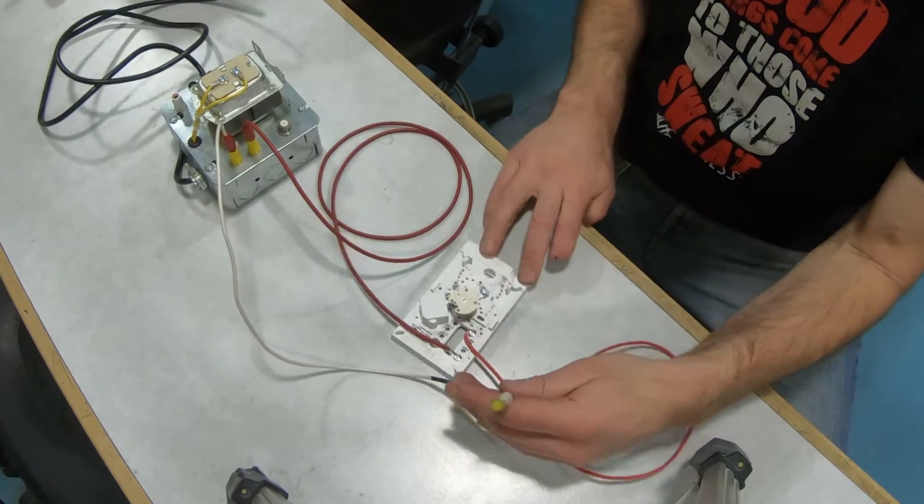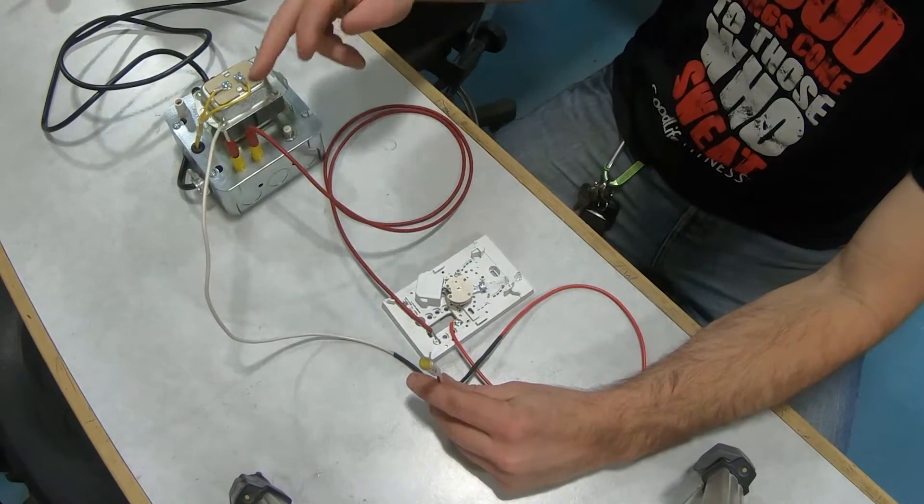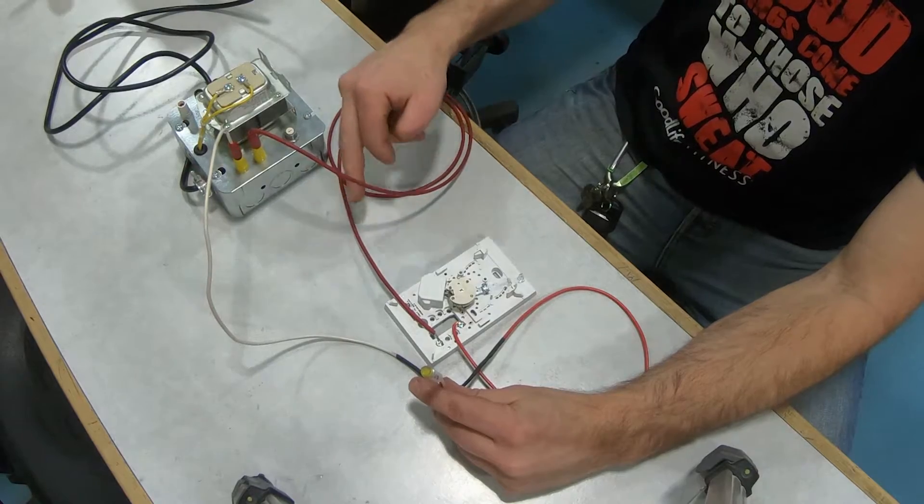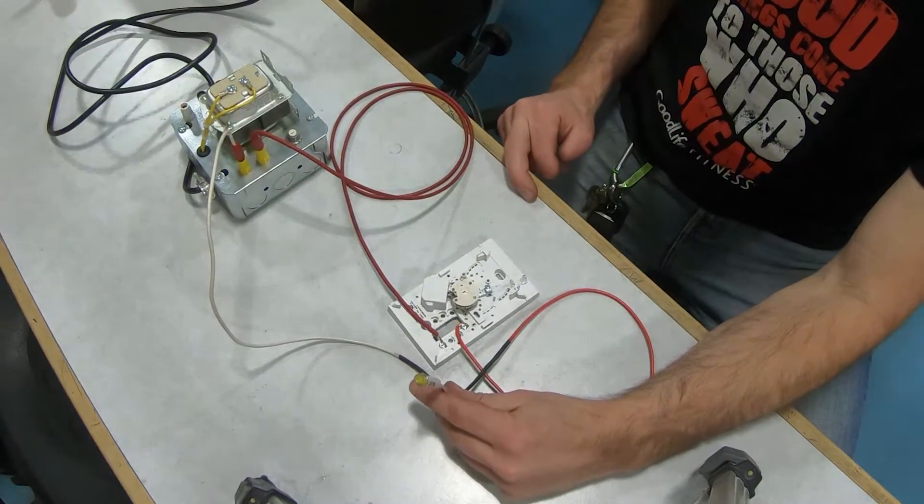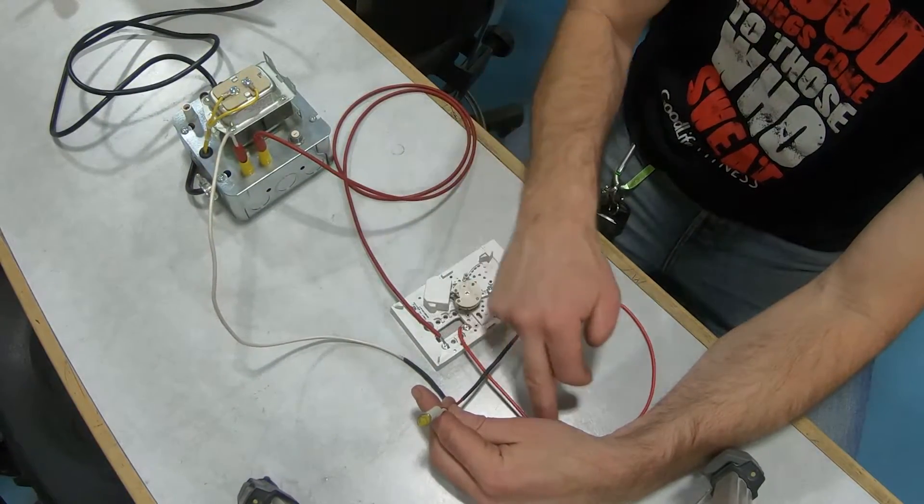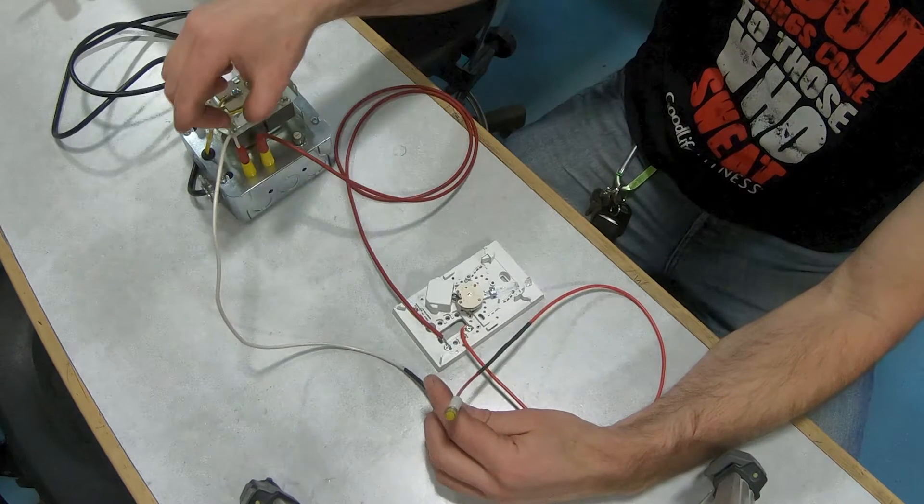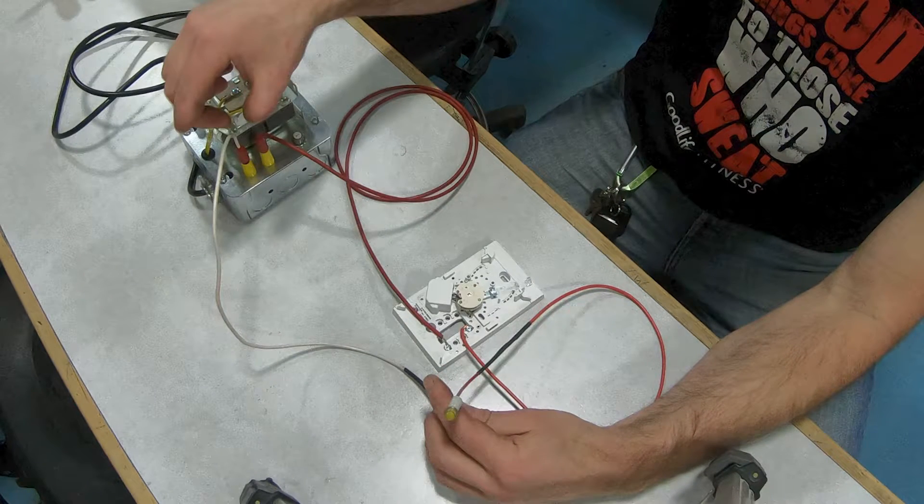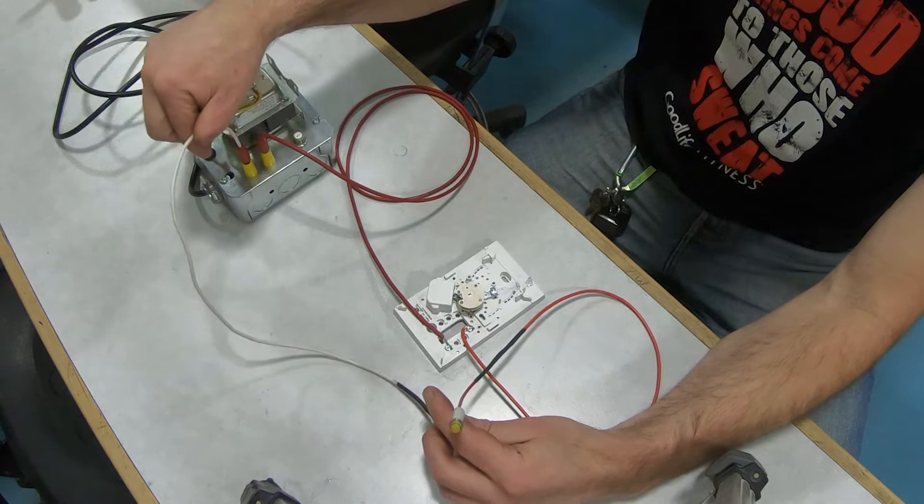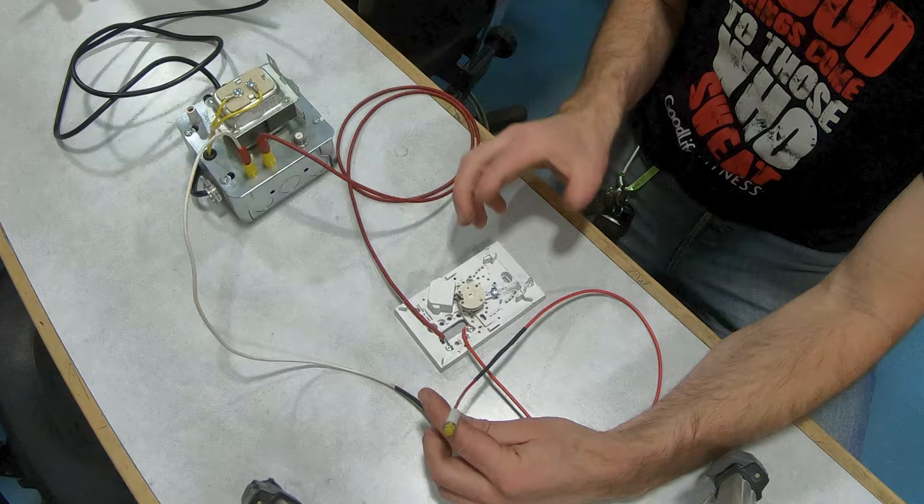In order to demonstrate this, I've made a little setup here. I've got a 24-volt transformer with a power lead going off to the thermostat. On the other side of the thermostat, a power lead goes out to an LED light, and from the other side of the LED light, the power returns back to the transformer to complete the circuit.